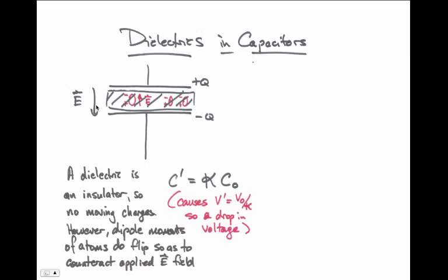The capacitance across the capacitor will be a number C prime that's equal to some constant kappa times the original capacitance before we put the dielectric in. That's because we want voltage to drop when we insert this dielectric. And because Q is equal to CV, and Q is the same, for voltage to go down, the capacitance has to go up.